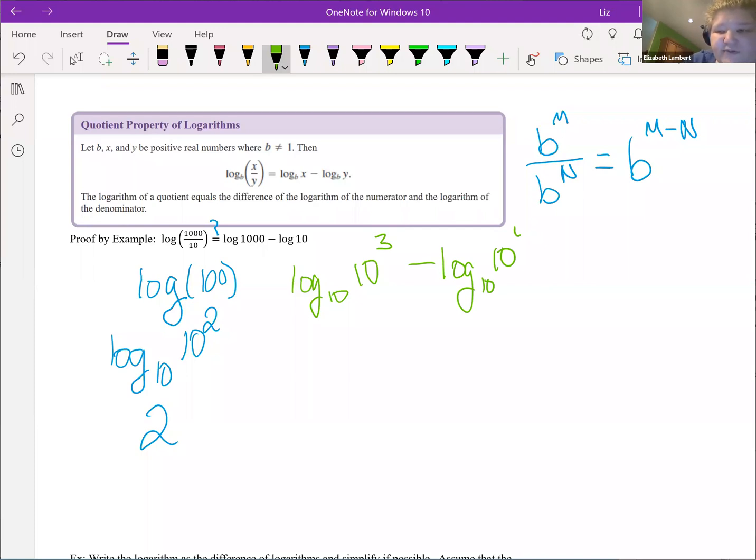And then the log of 10, well this is really 10 to the first. So the same way log base 10 of 10 to the cancelled out, we are going to end up with 3 minus 1, and let's make that actually look like a 1, which is 2. So they are indeed equal.